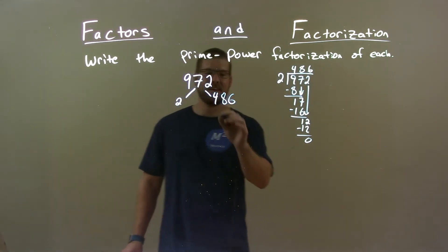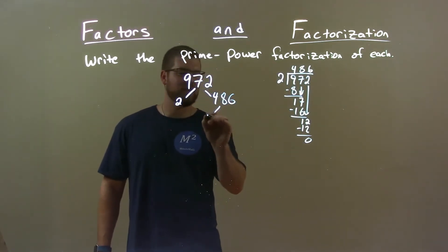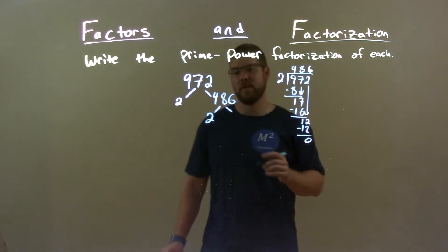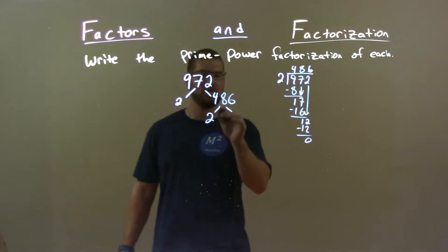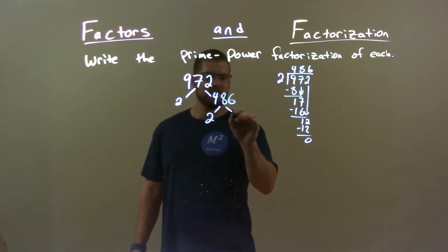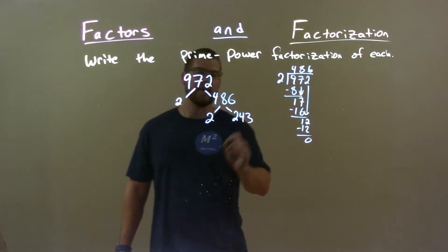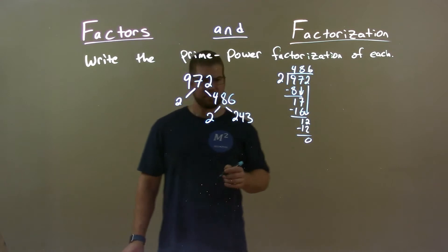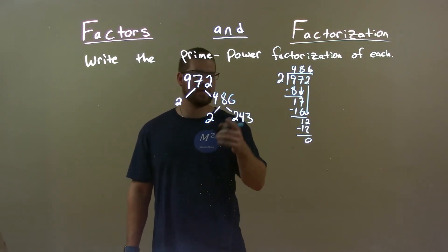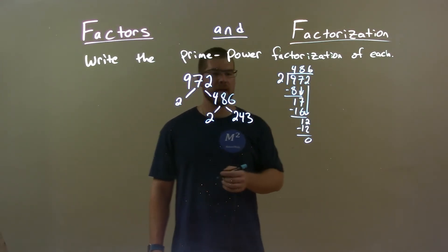486 is also divisible by two. 486 divided by two is 243.